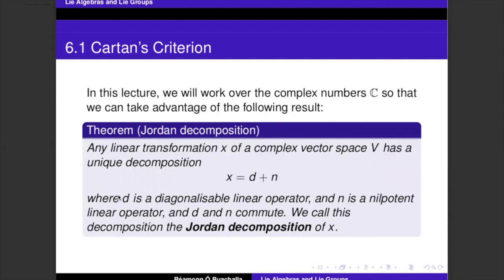In this first course it's going to be the complex numbers as the setting we explore, because that's where everything is best behaved and most beautiful. Specifically, why we're working over the complex numbers here is Jordan decomposition. We're not going to prove this now — we'll do it in a later lecture — because it also arises when we're classifying semi-simple algebras.